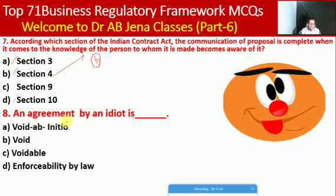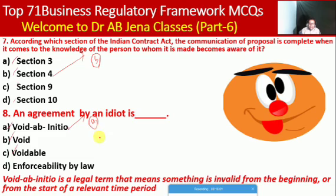Next MCQ: an agreement by an idiot is of what type? Whether void ab initio, void, voidable, or enforceable by law. Here A is the right option. For your information, void ab initio is a legal term meaning something is invalid from the beginning or from the start of a relevant time period — that is the meaning of void ab initio.